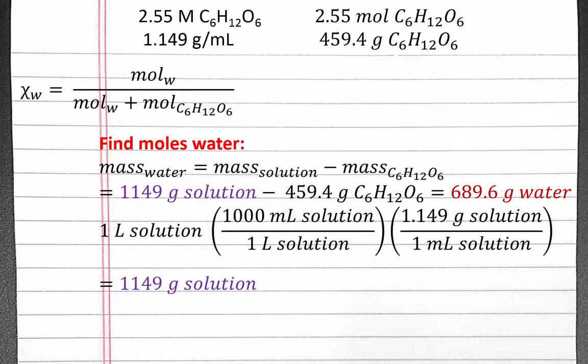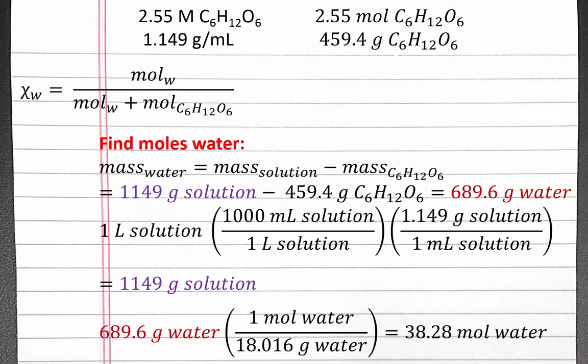We have 689.6 grams of water in 1 liter. Our next step is to use dimensional analysis and the molar mass of water to convert from grams of water to moles of water. We have 38.28 moles of water in our 1 liter of solution.